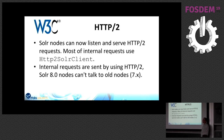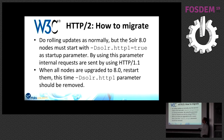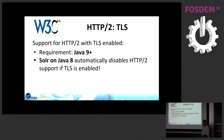The downside is that Solr 8 nodes cannot talk to old nodes by default because it tries HTTP/2 and the old nodes don't support it. For rolling upgrades, you can start the new Solr version with a special system property — `solr.http1=true` — then replace one node at a time, and once done restart them all with HTTP/2 enabled.